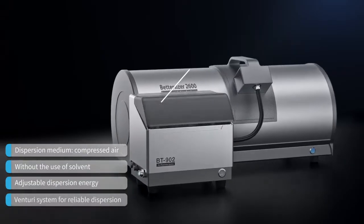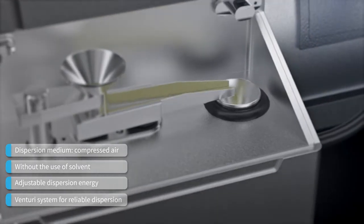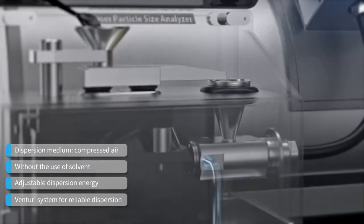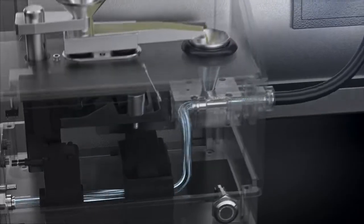The selection of appropriate dispersion energy breaks up agglomerates, and the patented optical system of the BetterSizer 2600 provides accurate sizing results of dispersed particles.